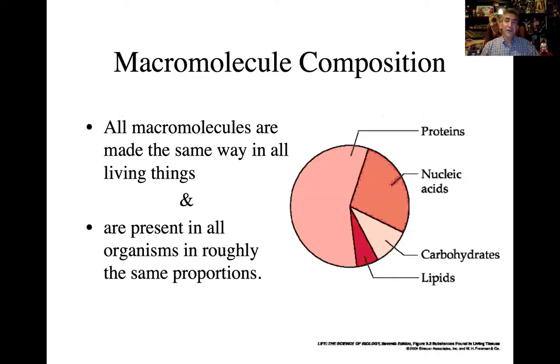So regardless if you are a human, if you're a cat, a dog, a frog, a mushroom, a plant, all living things are going to be comprised of these four macromolecule categories. And roughly about that percentage, right? So the biggest piece of the pie being proteins. The second biggest in abundance, but the most important would be the nucleic acids, and then carbohydrates, and then followed by lipids. So again, all organisms share these four in roughly the same proportion.